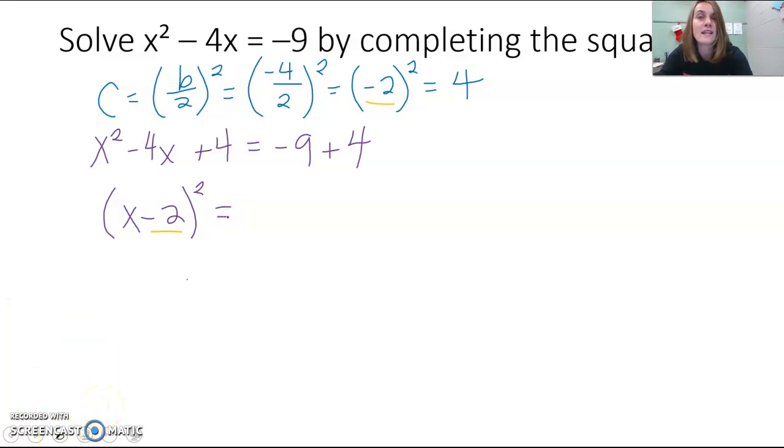And then if we simplify the right side, negative 9 plus 4 is negative 5. And now we have our perfect square variable expression equal to our constant. And we're able to use the square root property.